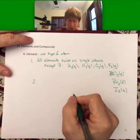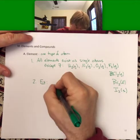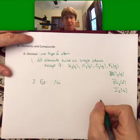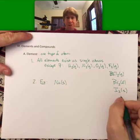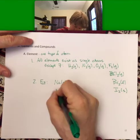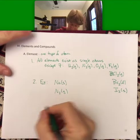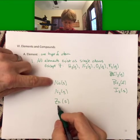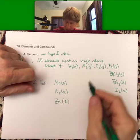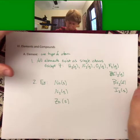All other elements, for example, sodium, which is Na, would just be Na. It turns out at room temperature it's a solid. Nitrogen would be N2. Zinc, which is also a solid, would just be written by itself. All of the other elements, except for these seven, are monatomic.